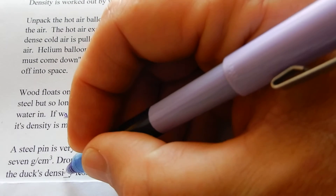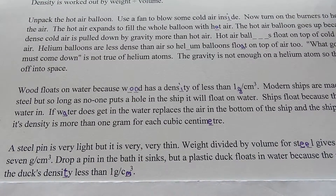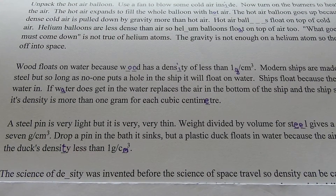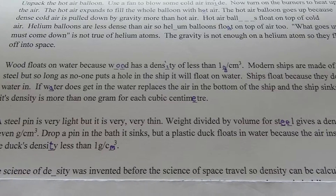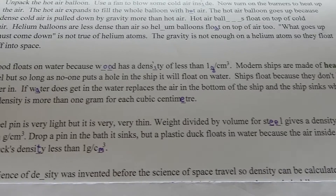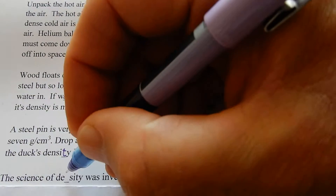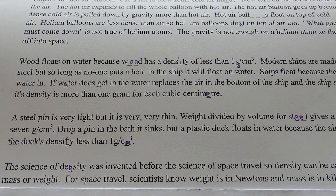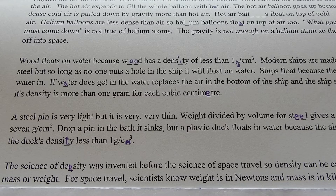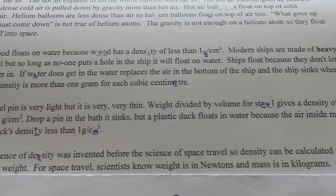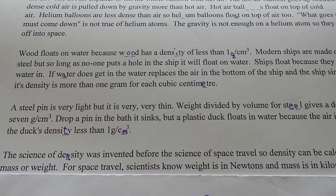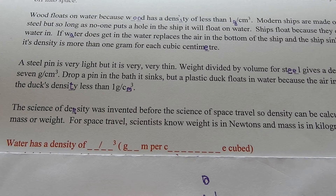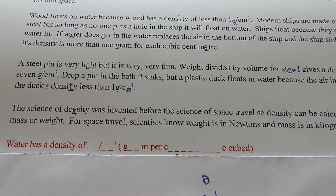Things that have a density of less than 1 float; things that have a density more than 1 sink. The science of density was invented before space travel, so density can be calculated using weight or mass. For space travel, scientists know weight is in newtons and mass is in kilograms — that's when we got the difference between mass and weight.